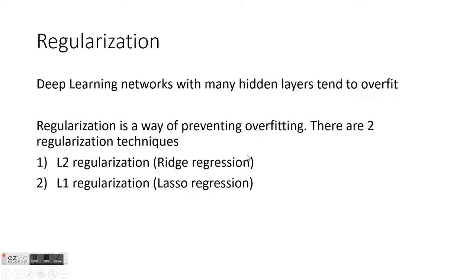We need to prevent this overfitting in neural networks, which is something that typically happens. There are two techniques to prevent overfitting, known as regularization. The first is L2 regularization, also known as ridge regression, and the second one is L1 regularization, also known as lasso regression.